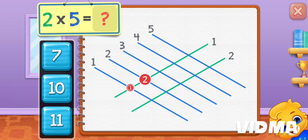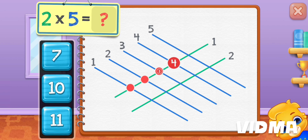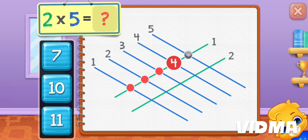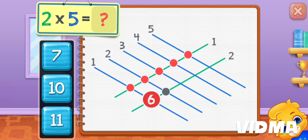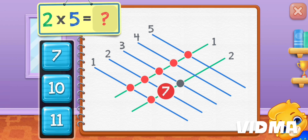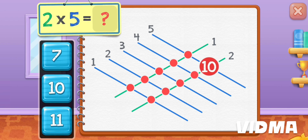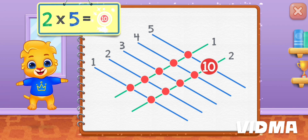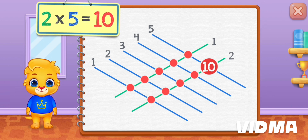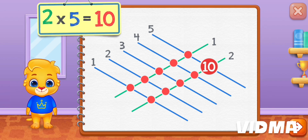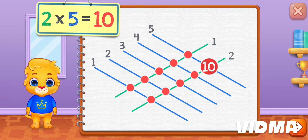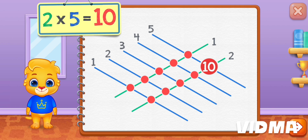Eight, nine, ten. Two times five equals ten.